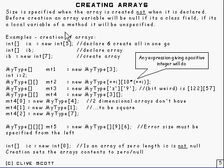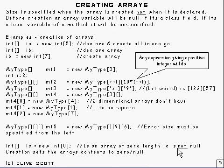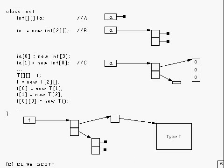Next, we talked about creating arrays. The size is declared when the array is created — that's where you specify it. You can use any expression that generates a positive integer. We also talked about arrays of zero length: they're not much use, but they have some consequences that aren't often documented in the literature.